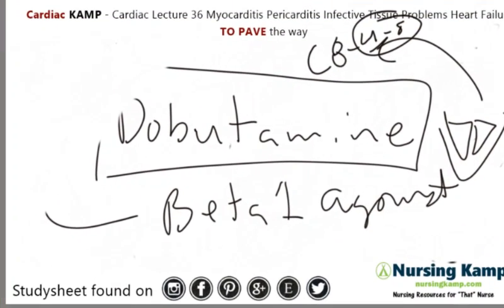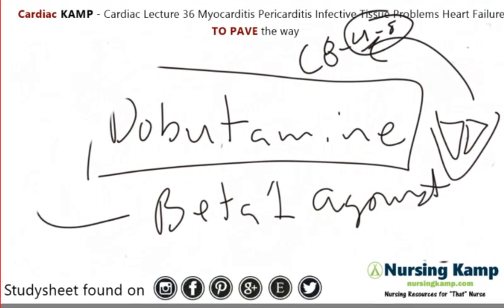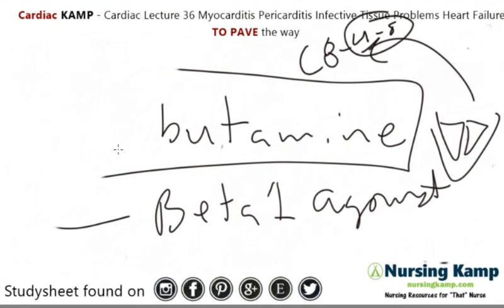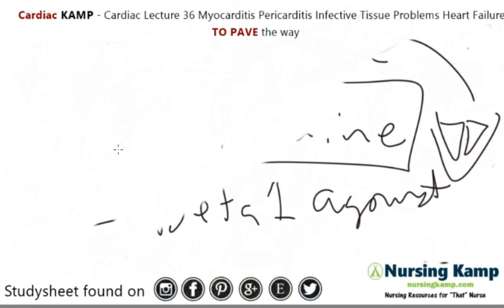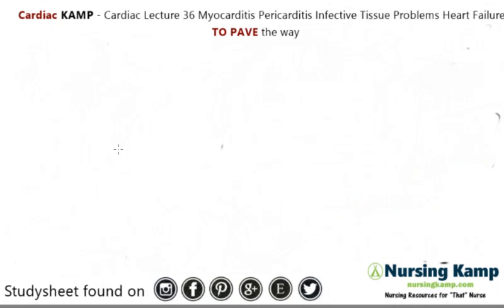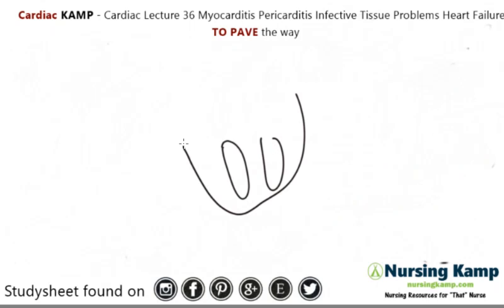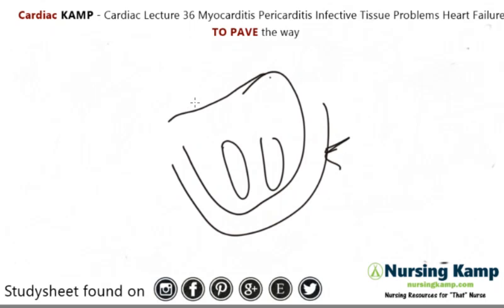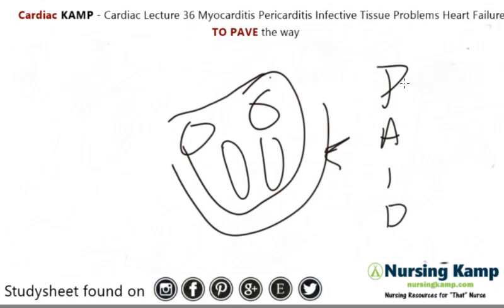Now let's get into pericarditis. The pericardium is outside the heart — it's the sac surrounding it. Pericarditis involves infection of this structure. Causes can include pericardiocentesis, where a needle is inserted into the pericardium to drain fluid or evaluate it.